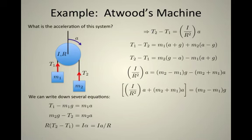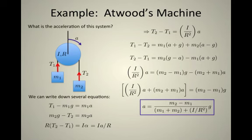And now I have only one unknown, a. So I'm going to do some manipulation here. Collect all my terms with a on one side and then divide. The acceleration comes out to be (m2-m1) over (m1+m2+I/R²), all that times g.